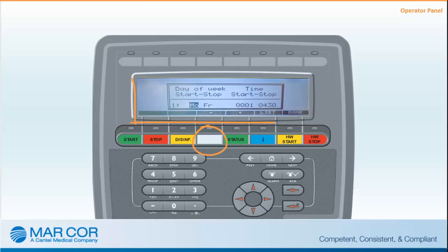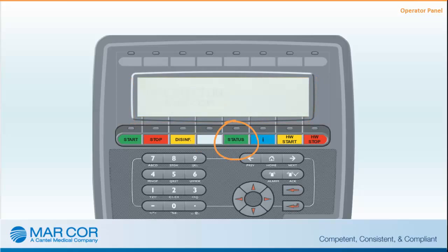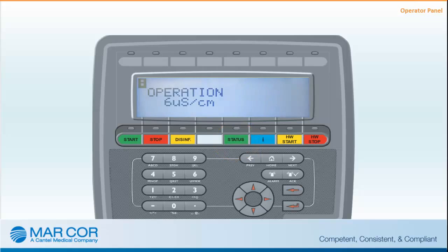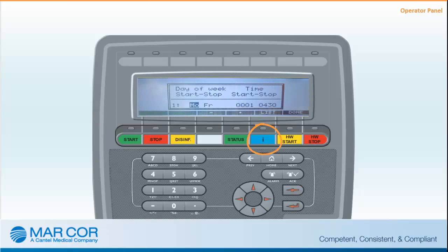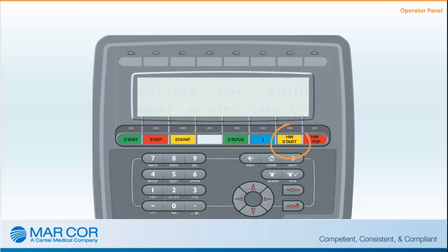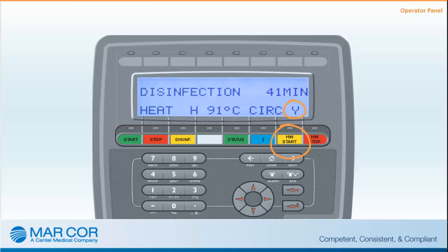The blank white button is used for programming days of the week in the time channels. The Status button displays information on the current mode of operation of the CWP and its status. The Information button is enabled when a display text in reverse type occurs just above the button, indicating the present function of the button. The HWStart button starts hot water circulation, and the HWStop button stops hot water circulation.